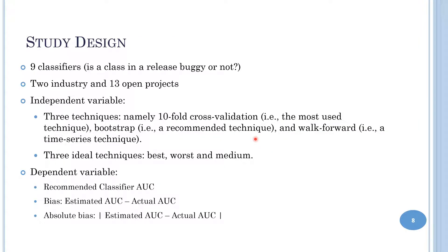In the study design we used nine classifiers to predict if a class is buggy or not. We used two industry and thirteen open source projects. As independent variables we used three techniques: ten-fold cross-validation, bootstrap, and work forward. We also used three ideal baseline techniques — the best, the worst, and the median — to understand whether those previous techniques are excellent, pretty good, or pretty bad.